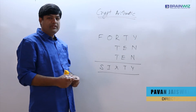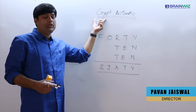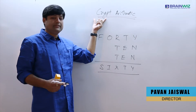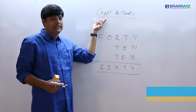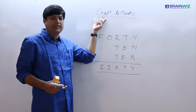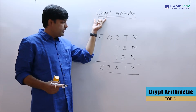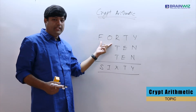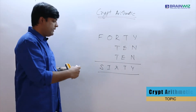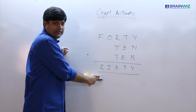We are going to see a question from cryptarithmetic. This is an important topic for placements and this topic is nowadays commonly given in Infosys and TCS. A question has been given that FORTY plus TEN plus TEN, and we are supposed to get the sum as SIXTY.